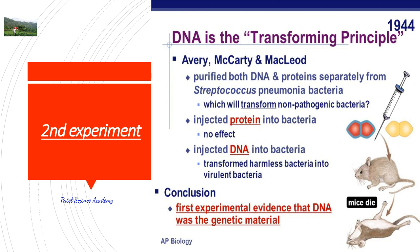These three biologists tried to prove that the transforming principle is DNA and that it acts as a genetic material, through their experiments. So what did they perform? They purified DNA, RNA, protein, enzymes, and other material from the cell-free extract of the S strain cells.